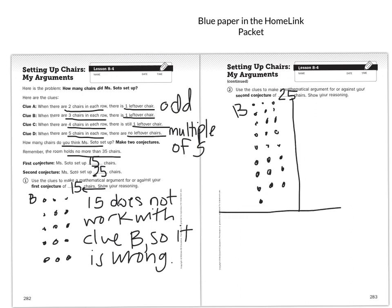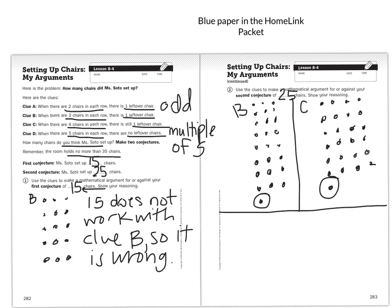Clue C says when you put four chairs in each row, there's still one leftover chair. Counting to 25 in groups of four... does it work with clue C? Yes — when there are four chairs in each row, there's still one leftover chair. So clue B: one leftover chair. Clue C: one leftover chair. So far we're good — 25 fits clue A (it's odd), clue B, and clue C. So now we move on to clue D.